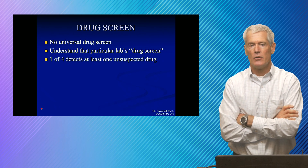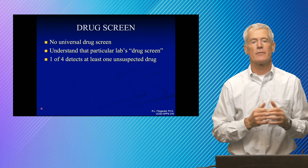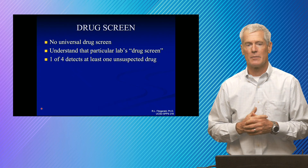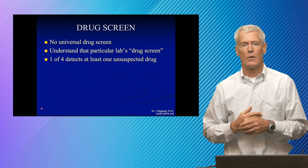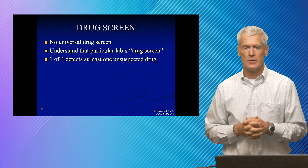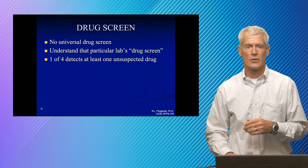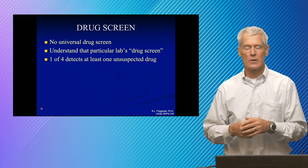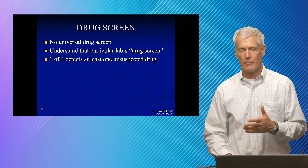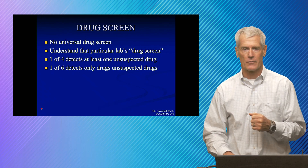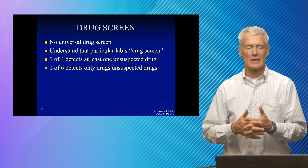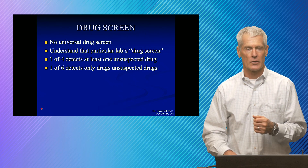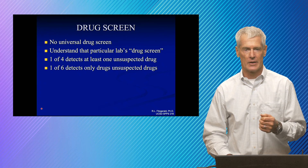Most laboratories today are using immunoassay-based drug screens, and you have to be looking for it to find it. You might have an immunoassay for opiates that picks up codeine and morphine, but it won't pick up methadone or oxycodone. Understanding exactly what your screen includes is important, and the only way to know that is to talk with your laboratory. If you do a broad-spectrum screen, you can detect things you're not looking for. Methods using mass spectrometry are typically favored for that. One in four broad-spectrum screens shows at least one unsuspected drug, and one in six detects only unsuspected drugs.